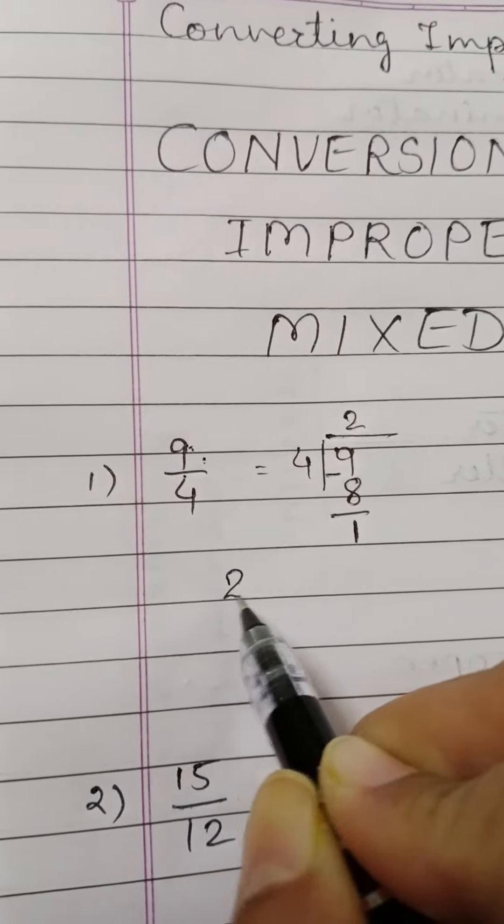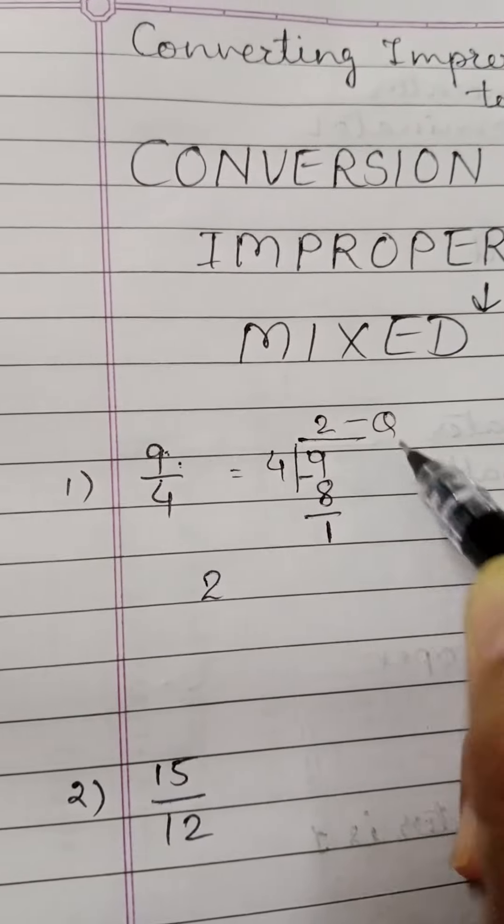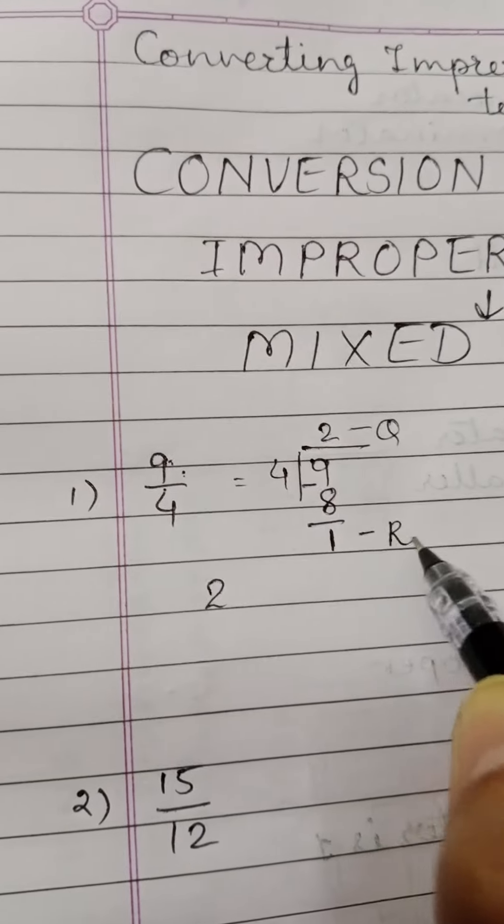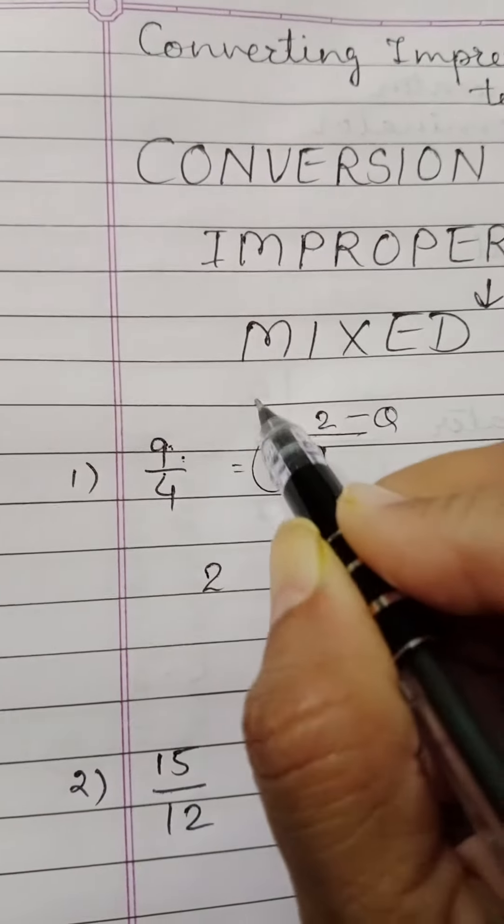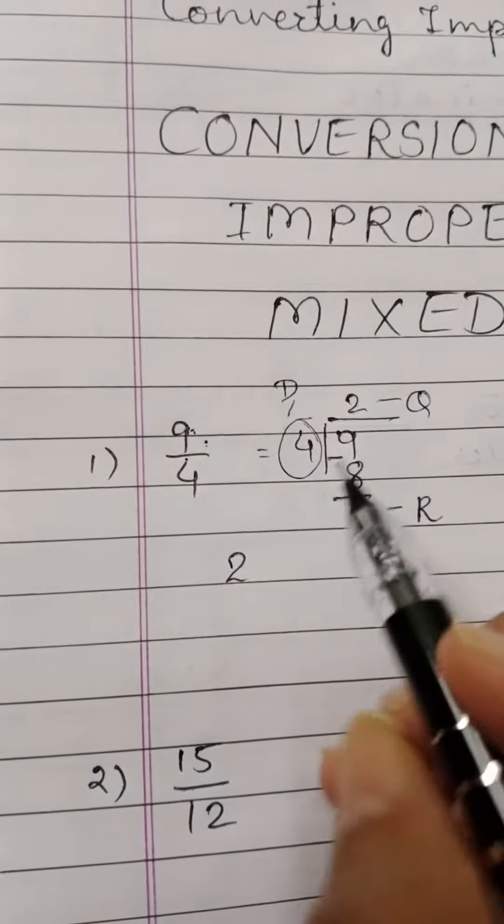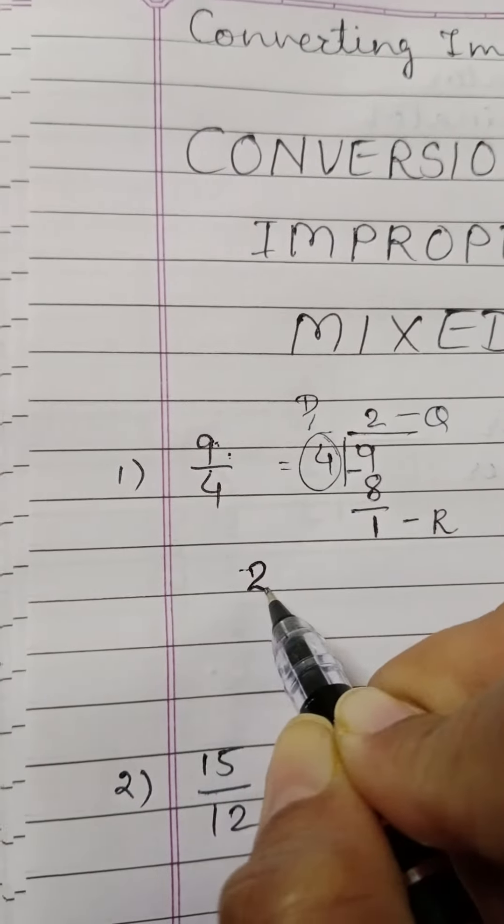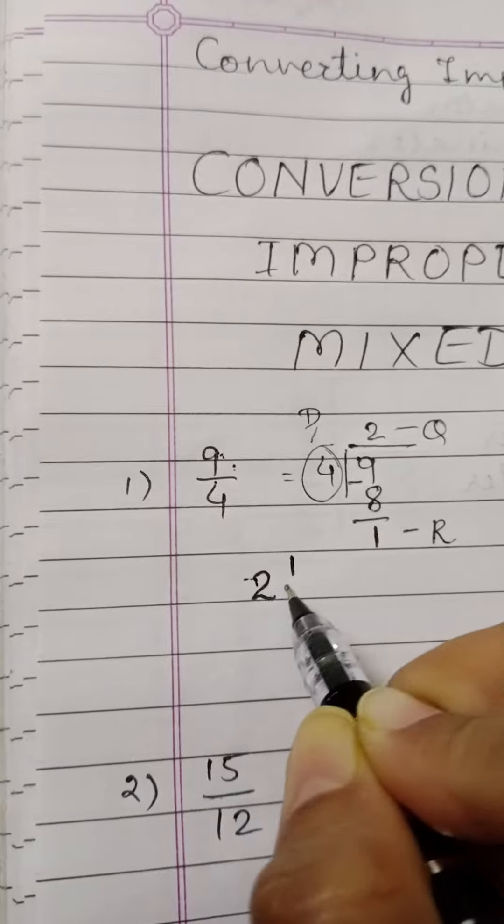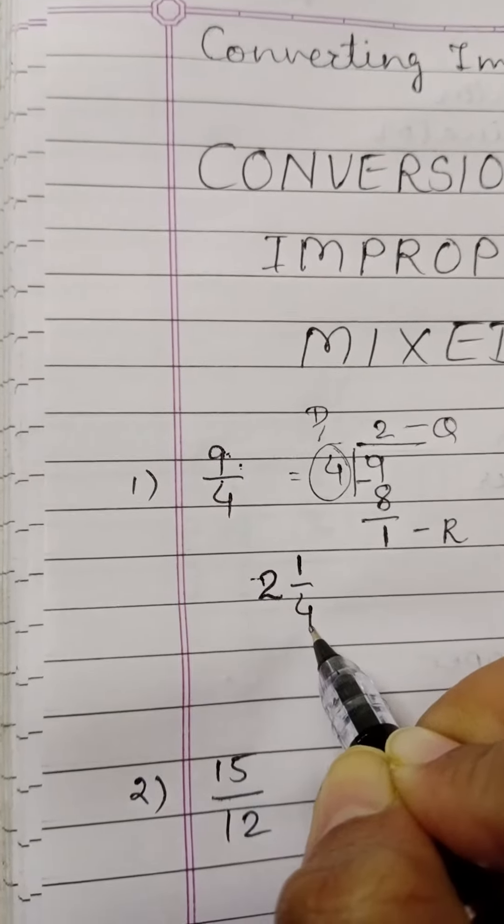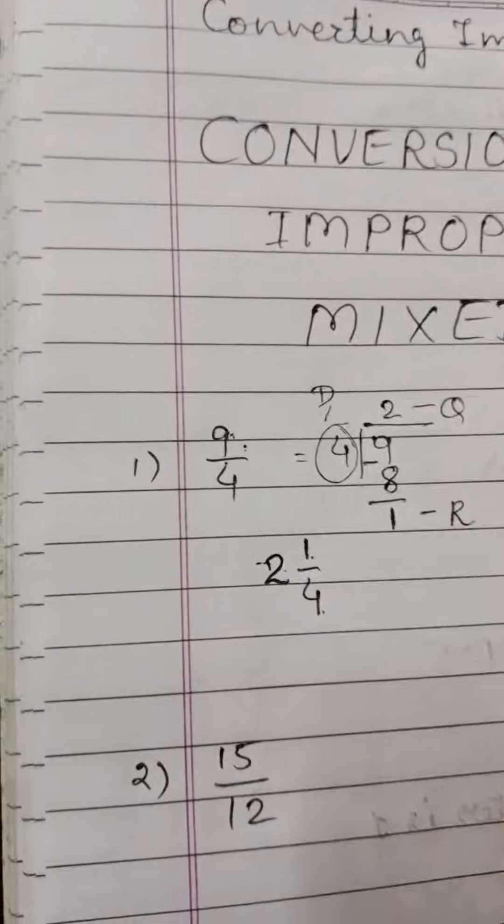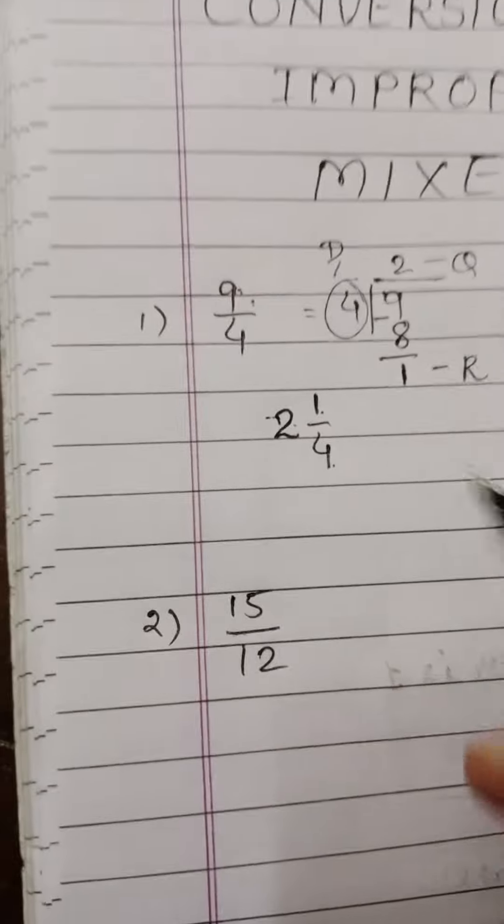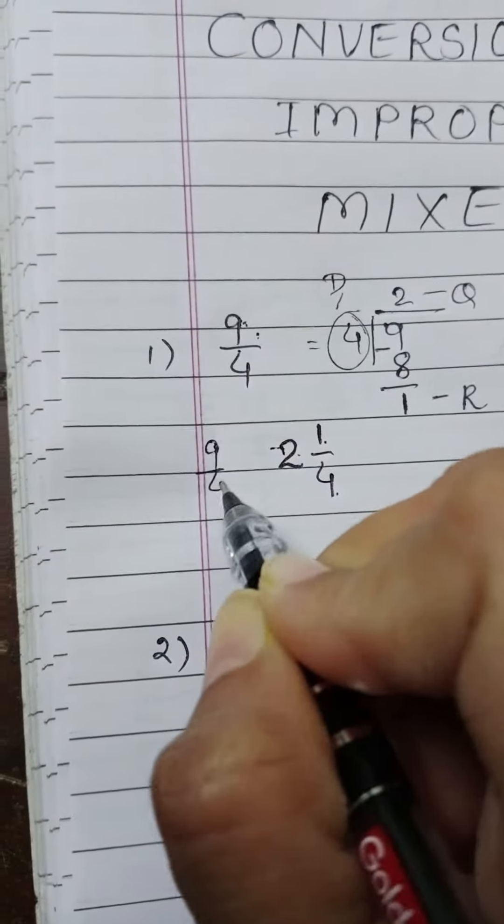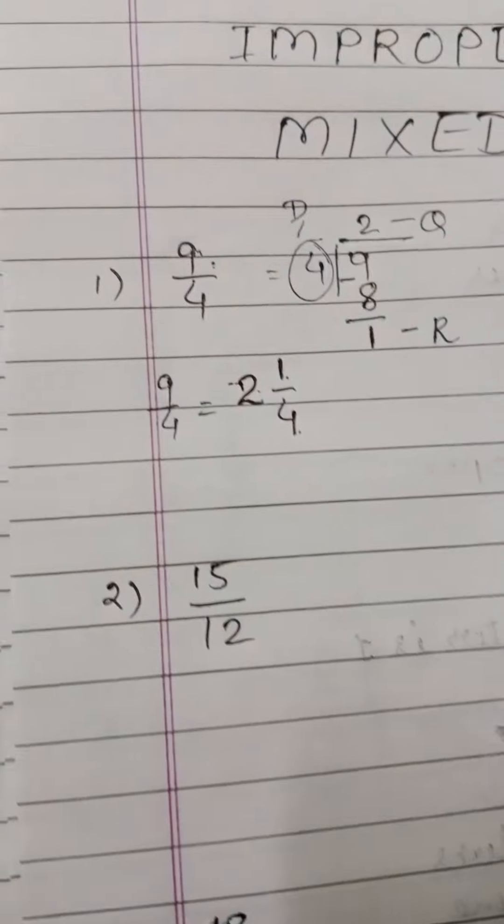This is written as 2. Here 2 is the quotient, 1 is remainder and 4 is divisor. Right? So you will write this as 2 whole 1 upon 4. Here quotient, here remainder, this is divisor. So 9 upon 4 is equal to 2 integer 1 upon 4.